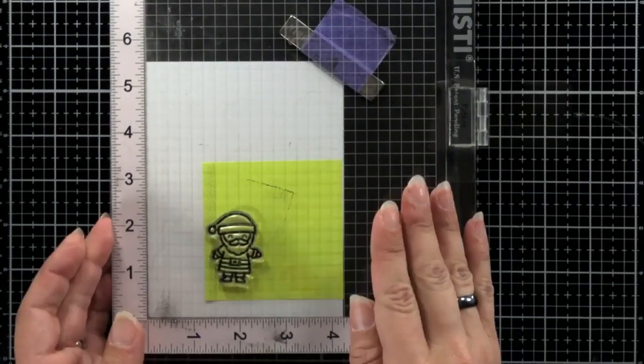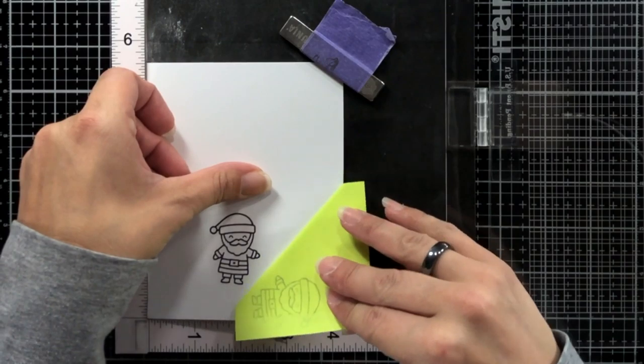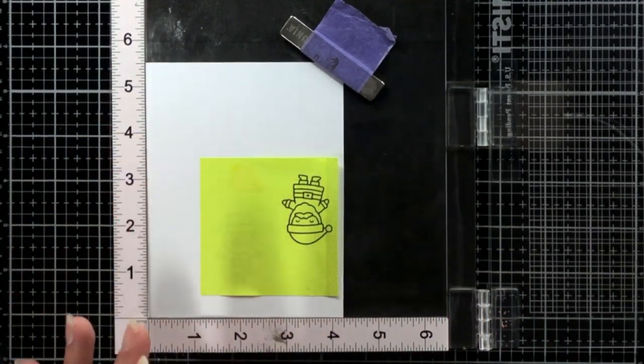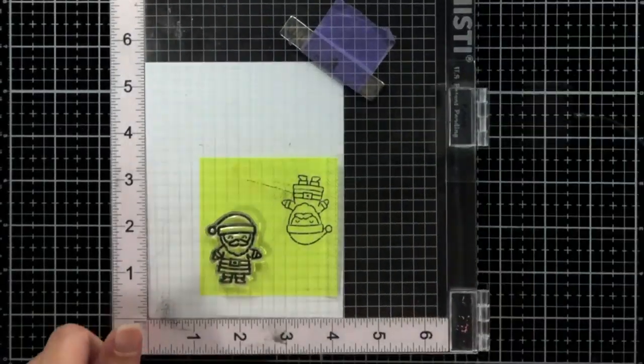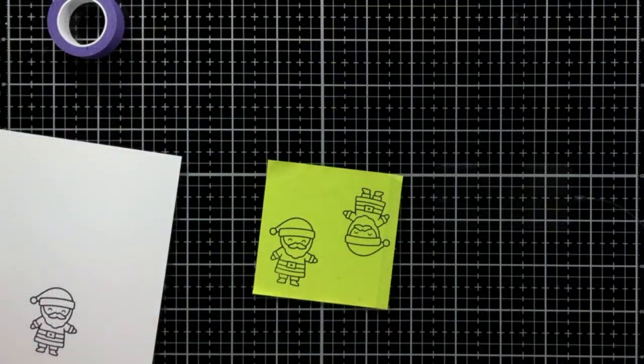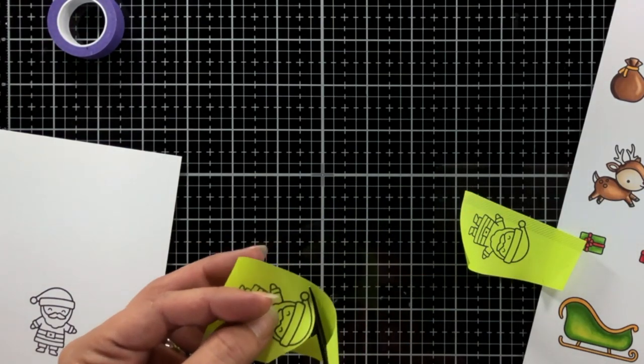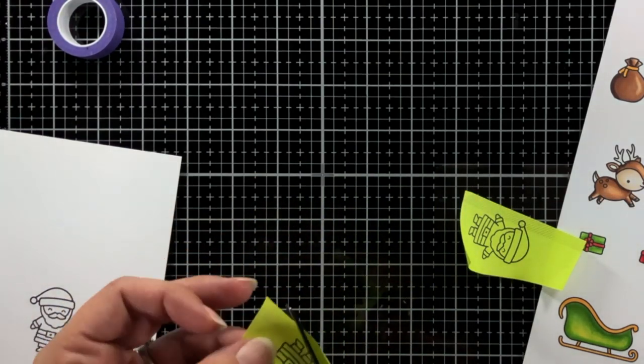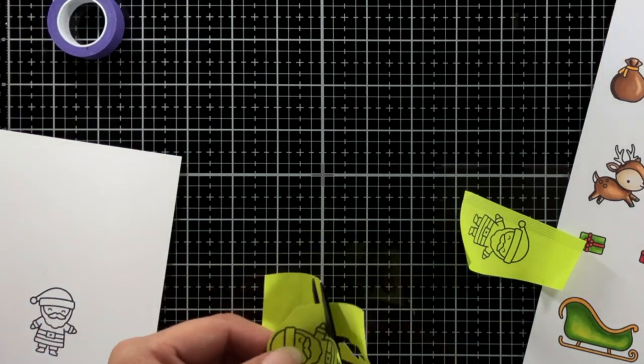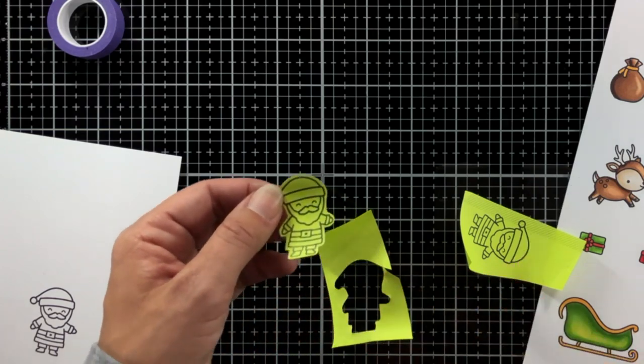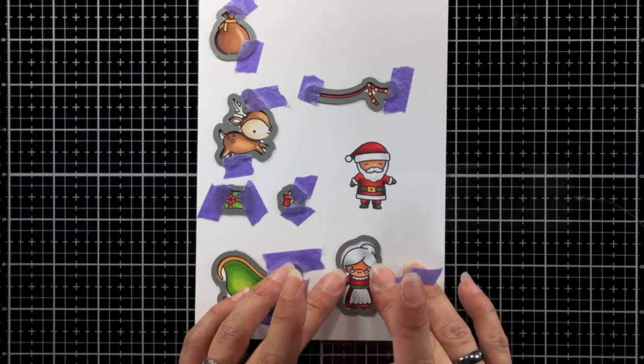Now I'm also going to create a mask and this is using the full sticky notes that Lawn Fawn carries and this is great because the entire thing is nice and sticky and it provides a great mask for my image when I do my ink blending. Then I can just take some scissors and fussy cut that out. I'm going to leave an edge around my Santa. This is going to make it look like I die cut him out so it'll match the rest of my images on my card.